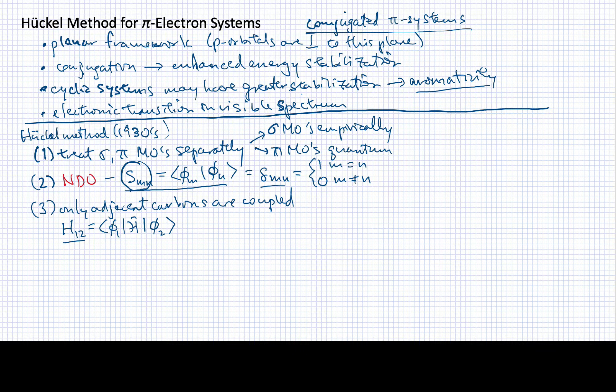that this is going to be the only one, the ones where they're one different in these numbers are the only ones that are going to be non-zero. But, we will also set H12, H23, H34, and so forth. We're going to set all of these equal to the same number. We're going to set it equal to beta.